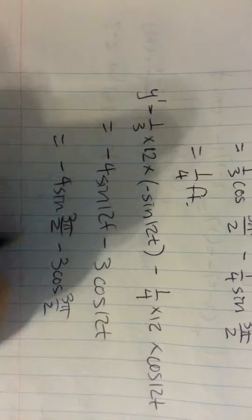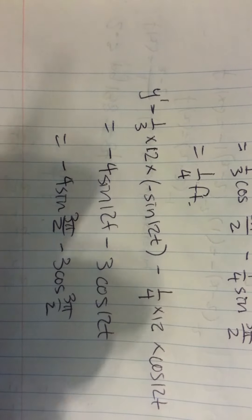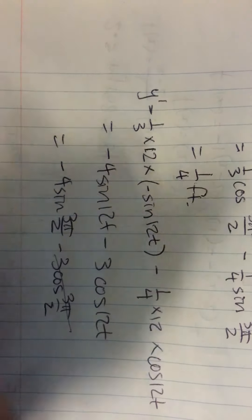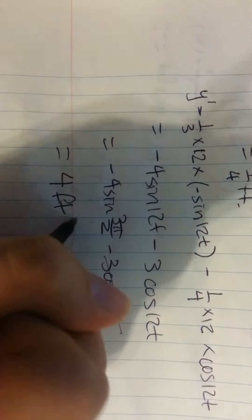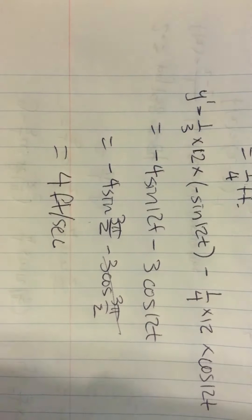Since sine of 3π/2 is negative 1 and cosine of 3π/2 is 0, that becomes 0, and equals 4. The answer is 4 feet per second for the velocity.